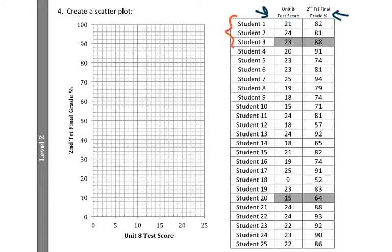But, we'll go through a couple of students here. So, students 1, 2, and 3. Let's plot those. So, student 1 got a 21 on his Unit 8 test score and ended up with an 82% for their final grade. So, what I'm going to do is I'm going to go over 21 to show that that was the score on the Unit 8 test score. And then, all the way up to 81 or 82%. That is going to be, I think, right here.